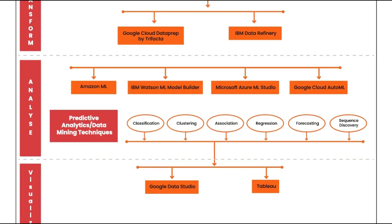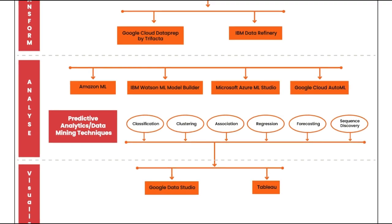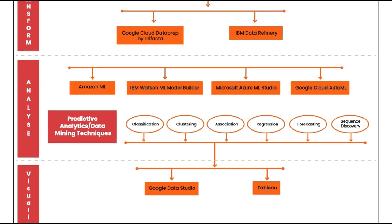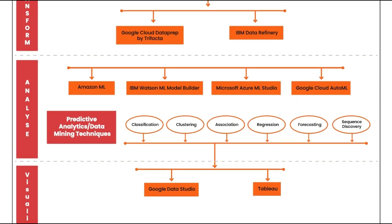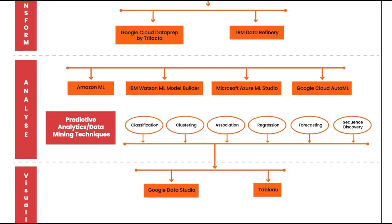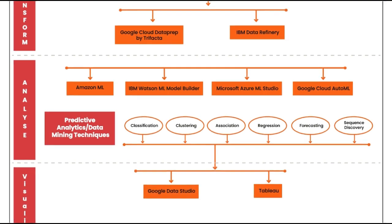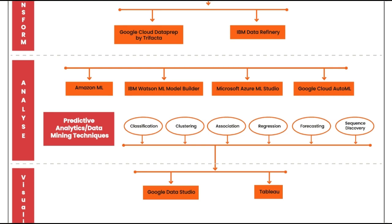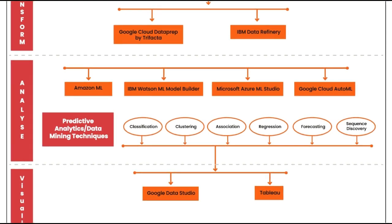Tools like Amazon ML, IBM Watson ML Model Builder, Microsoft Azure ML Studio, and Google Cloud AutoML can help you create complex machine learning models without any code. All four companies offer full-service custom modeling machine learning platforms. I'm soon coming up with a list of AI tools offered by these companies in a separate video.